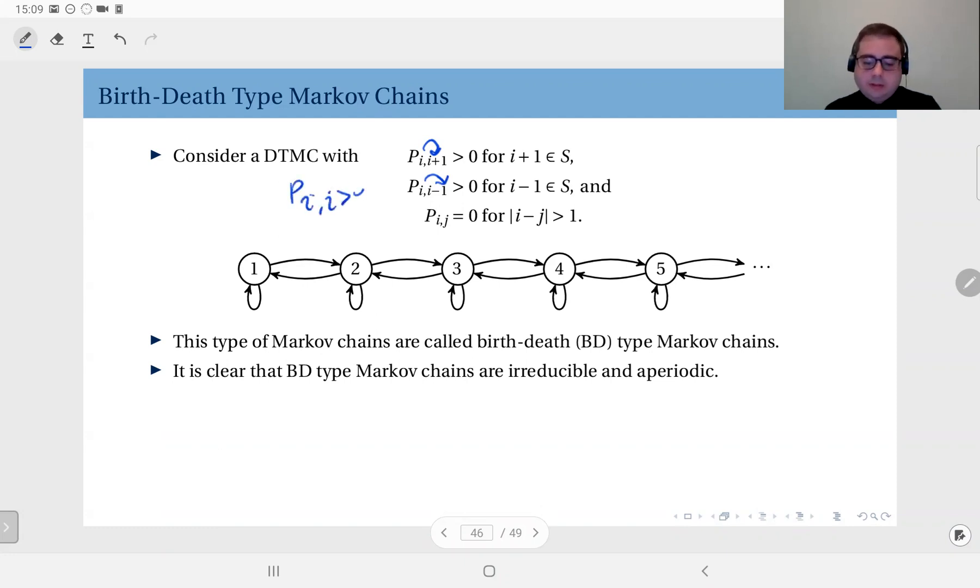You can also stay at state i, but apart from these, P_ij is 0 whenever the difference between i and j is greater than 1. For instance, from state 1 you cannot jump to 3 or 4, you can only go to 2 or stay at 1. At state 2 you can go back to 1, go up to 3, or stay at 2. You cannot jump to 4 or 5.